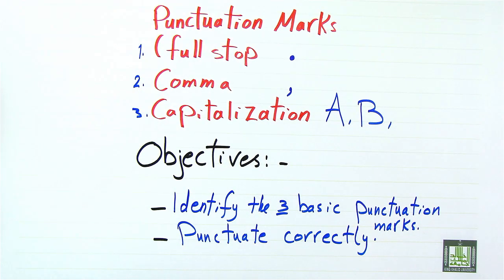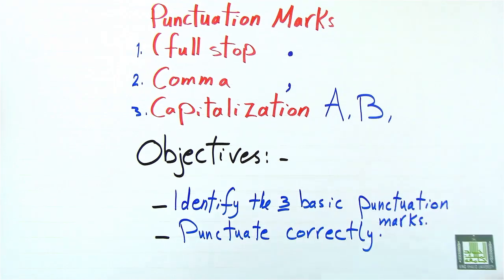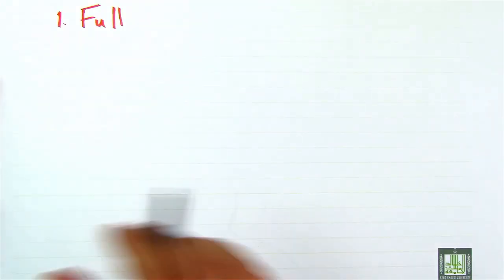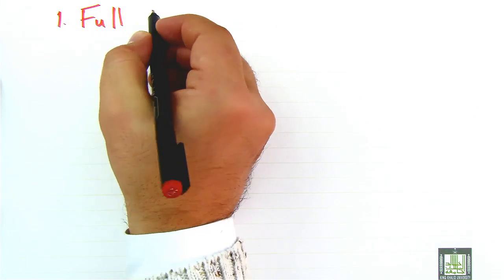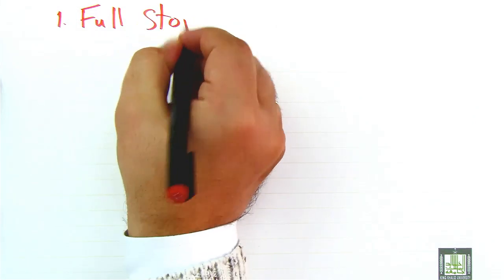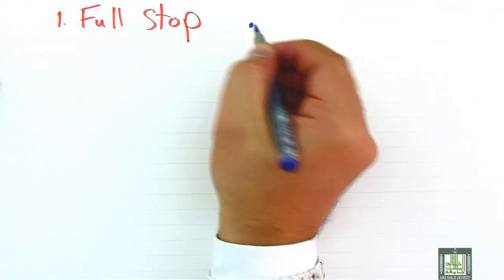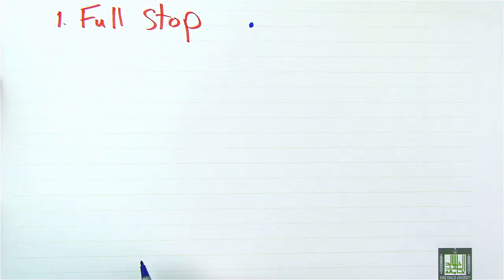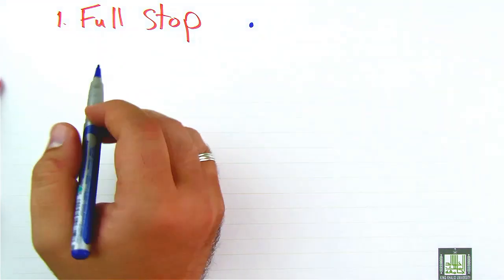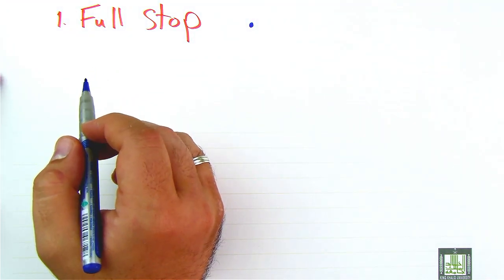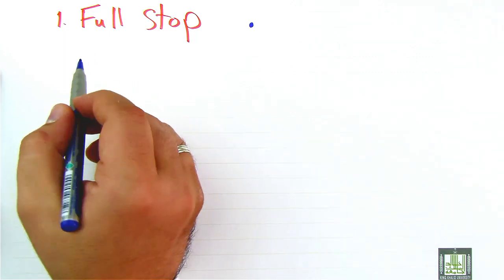First, we're going to talk about full stop. This is full stop. In American English they call it period, and it is a punctuation mark that is used to indicate the end of the sentence.